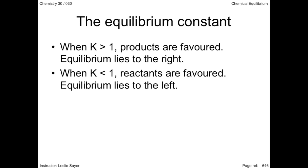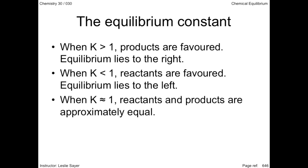When K is less than one, reactants are favored and equilibrium lies to the left. To the left means the reactant side of the equation. When K is around about equal to one, then there are approximately equal concentrations of reactants and products.